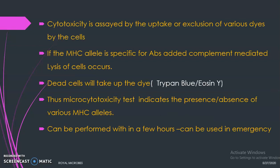After incubation, complement is added to the wells. If the antigen and antibodies are specific, they bind to form an antigen-antibody complex, allowing complement to bind and resulting in complement-mediated lysis. This cytotoxicity is assayed by the uptake or exclusion of dyes by the cells. A vital stain is used that is taken up by dead cells — examples are trypan blue and eosin Y. Dead cells take up the dye, indicating the presence of specific MHC alleles. This test can be performed within a few hours and can be used in emergency conditions.